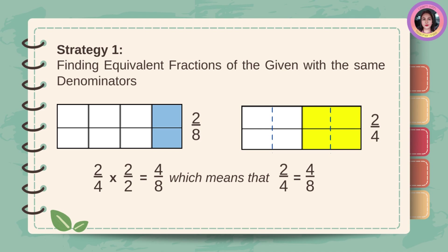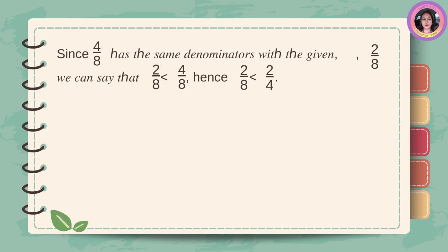Strategy number 1: finding equivalent fractions of the given with the same denominators. For 2 eighths and 2 fourths — 2 fourths times 2: 2 times 2 is equal to 4, and 4 times 2 is equal to 8. Which means that 2 fourths equals 4 eighths. Since 4 eighths has the same denominator as 2 eighths, we can say that 2 eighths is less than 4 eighths. Hence, 2 eighths is less than 2 fourths.